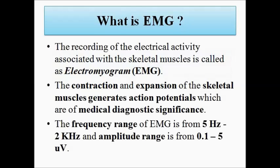EMG is the recording of the electrical activity — the electric potentials generated by the skeletal muscle groups: biceps, triceps, thighs, hips, quads, shoulders, and other common muscle cells. These muscle groups all come under the electromyogram recording.